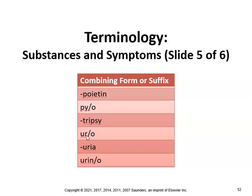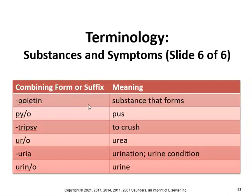Poietin means substance that forms. Pi means pus, so pyuria means pus in the urine. Urea or uria refers to urination — for example, uremia means urea in the blood, and dysuria means difficult or painful urination.